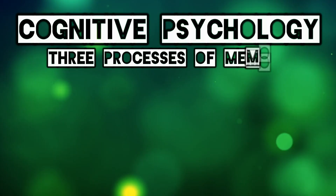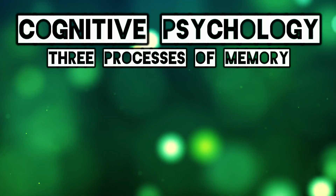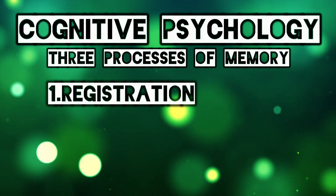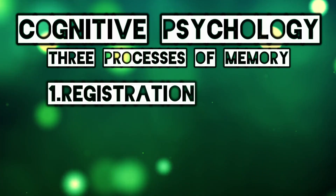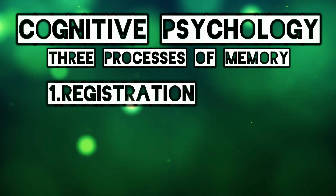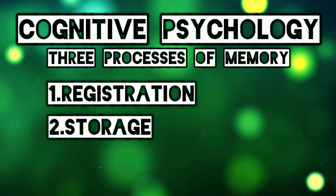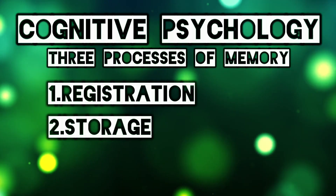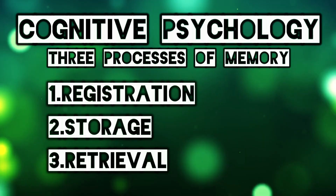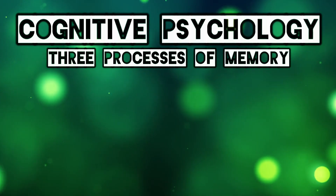Cognitive psychologists generally agree that there are three processes of memory. One, registration — this refers to the point that something enters the memory system. Two, storage — referring to where the information waits before. Three, retrieval — the process of recalling the information.